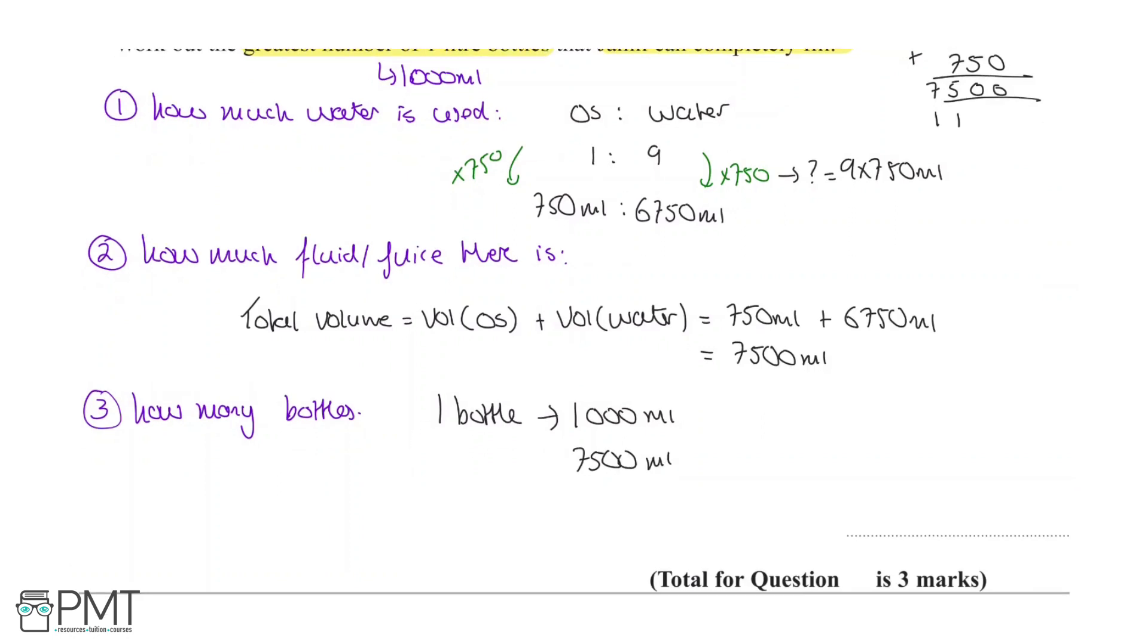So if we have 7,500 millilitres, to find out how many bottles we need, we first need to work out what we times 1,000 by to get 7,500. This will be 7,500 over 1,000. Because we're dividing by a multiple of 10, all we need to do is move the decimal place the number of zeros of our denominator. So one, two, three for each of the three zeros. This is going to become 7.5 times, so we will end up with 7.5 bottles.